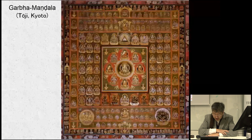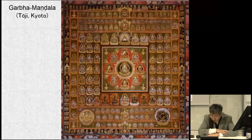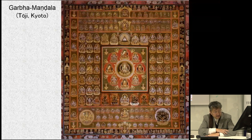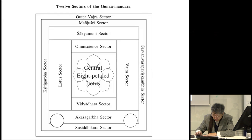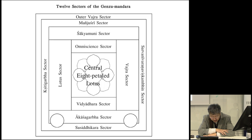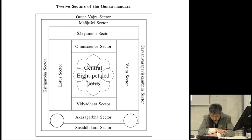This is the Genzui Mandala. The Genzui Mandala is a version of the Garbha Mandala brought back to Japan by Kukai that is widely used today. It consists of approximately 414 deities systematically arranged in 12 sectors, including the Central 8-Petal Lotus, the Omniscience Sector, the Vajradara Sector, the Lotus Sector, the Vajra Sector, the Shakyamuni Sector, and others — totaling 12 sectors.